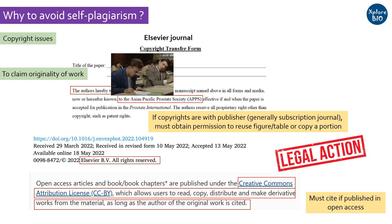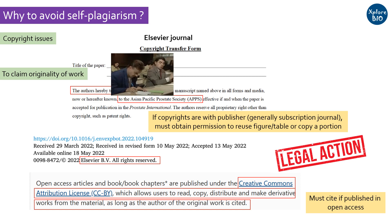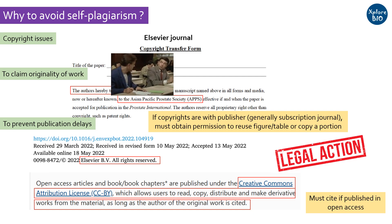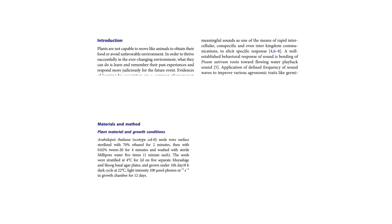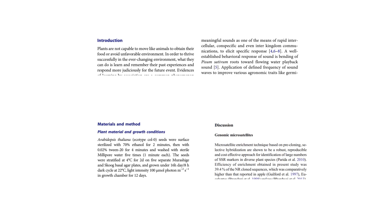Thirdly, most journals perform screening of papers for similarity and plagiarism with previously published work of reviewers or other authors. In case it is found, it may cause delay in publishing or outright rejection of the paper. Generally, the introduction, methods, and discussion are the major areas where plagiarism is most commonly detected.